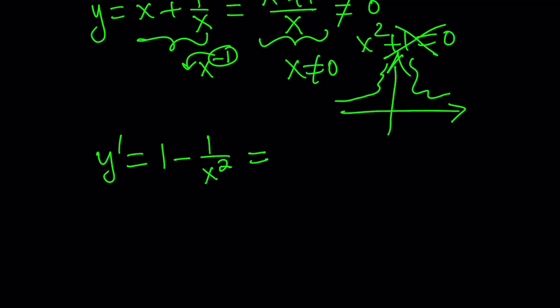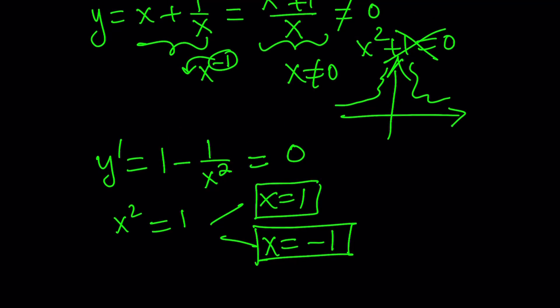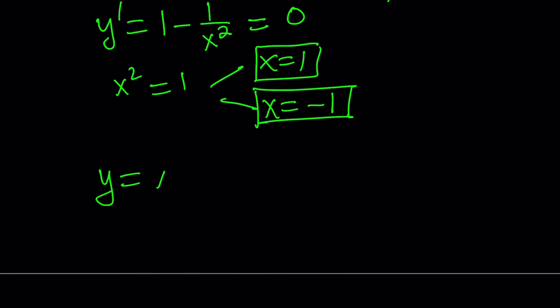Now, set the derivative equal to 0. This gives you some critical points, and here you get x squared equals 1, which means x is either 1 or negative 1. Now, this is kind of interesting because we got two values, but we have to be careful about one thing, which is the domain and range of this function. Since x cannot equal 0 for our particular function, we can look at two cases.